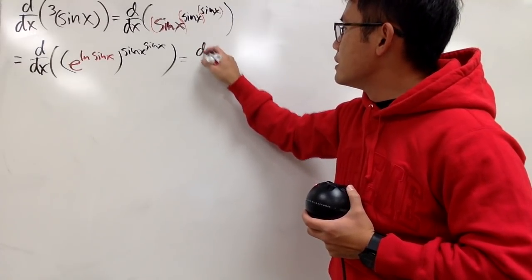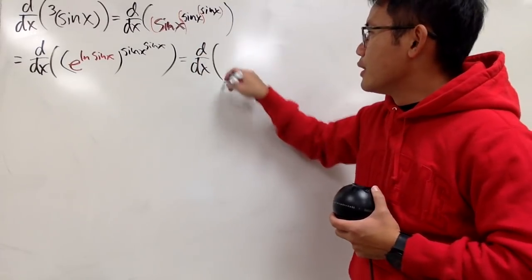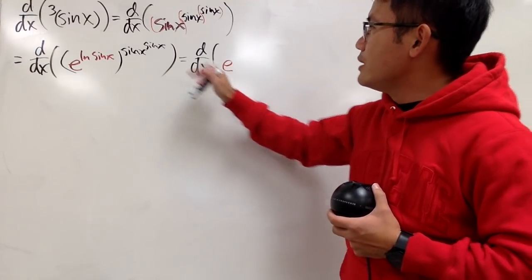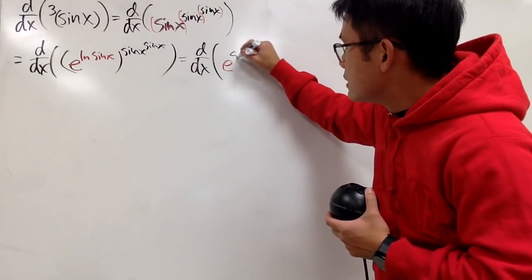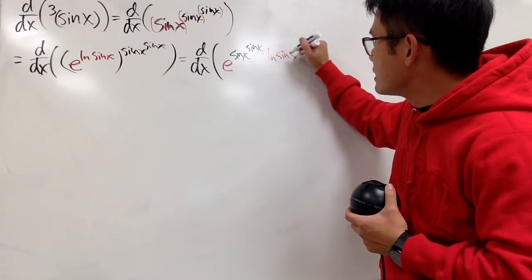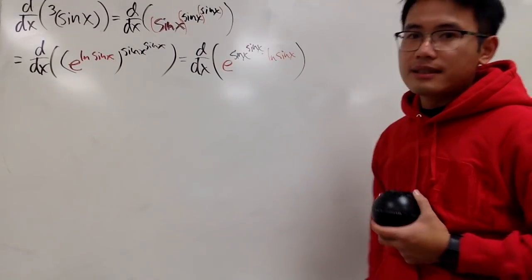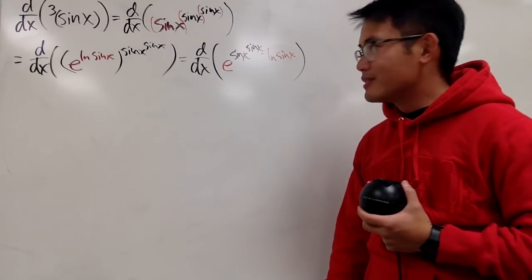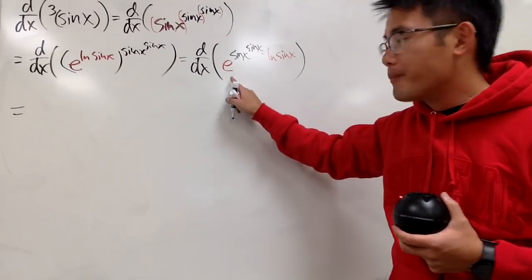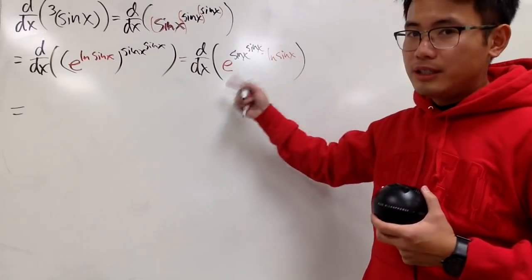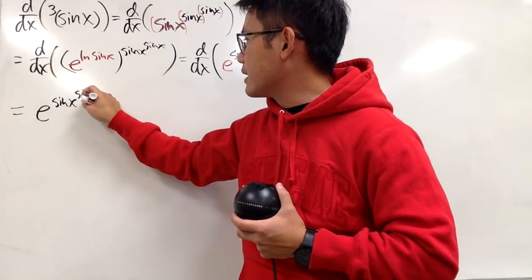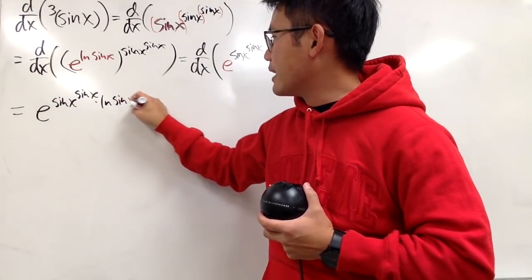When you have this to that power, you can just multiply the powers. Therefore, you end up with e raised to the sin x to the sin x power times ln of sin x. We are ready to differentiate, so check this out. The derivative of e to the something is always e to that thing, so I will just write this down as e to the sin x to the sin x times ln of sin x.